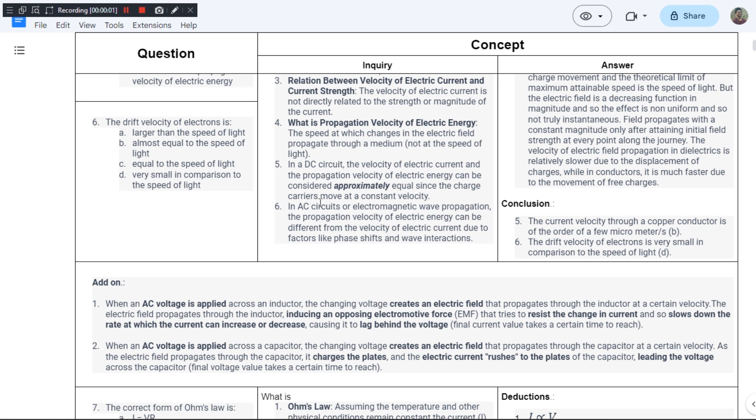This is the sixth question from chapter 1 of JB Gupta's book and the question goes the drift velocity of electron is?